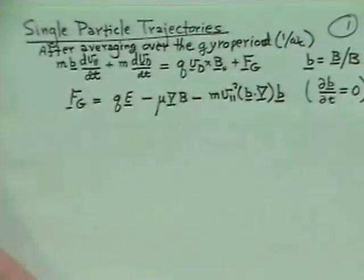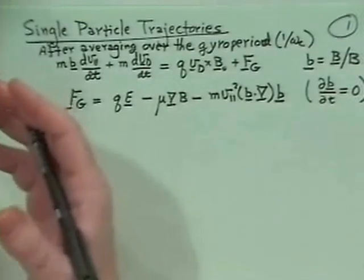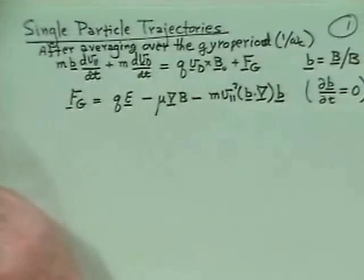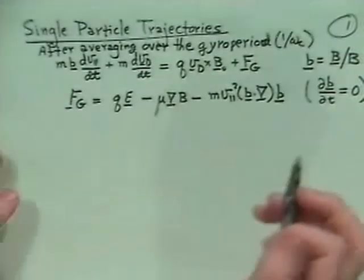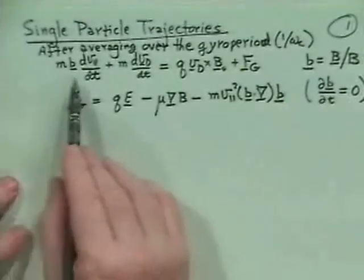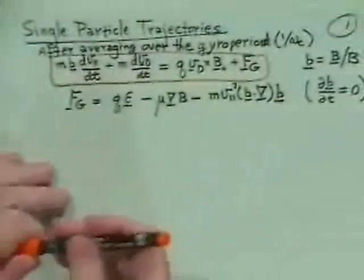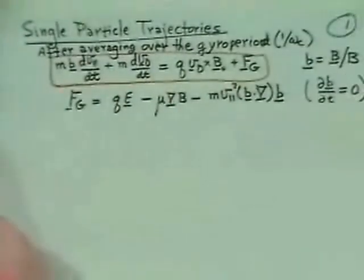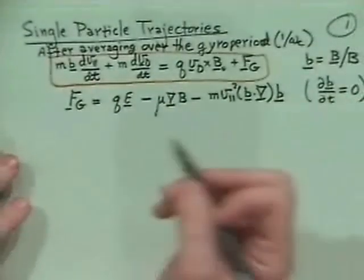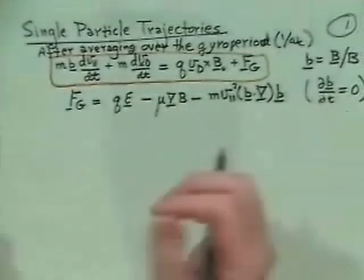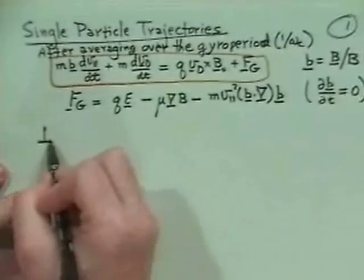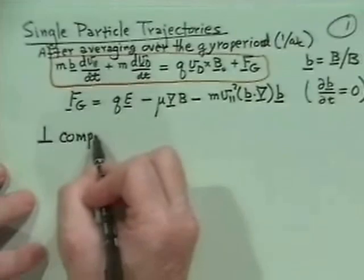At the end of last time, what we talked about was the parallel motion — motion along the magnetic field. So the next part we want to talk about is not the parallel component of this equation of motion, but we want to now treat the perpendicular component.